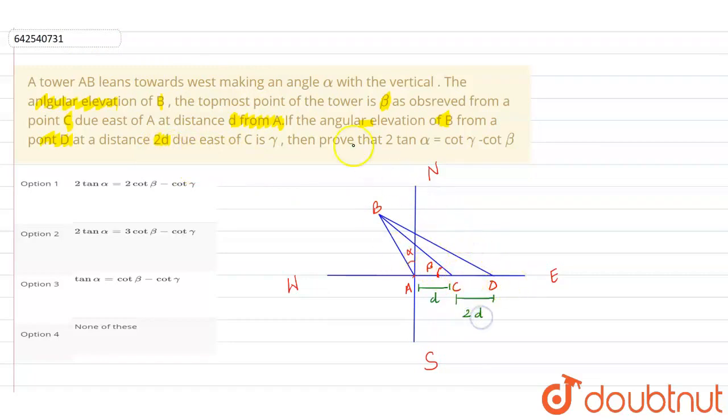And they are saying that it is making an angle gamma, the topmost point of the tower. So now what we need to prove is, prove that 2 tan alpha equals cot gamma minus cot beta. So we need to prove this. So let us prove this.